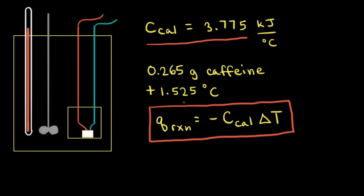Let's say our goal is to calculate the heat of combustion of caffeine in kilojoules per mole. So we take 0.265 grams of caffeine, put that in our calorimeter, combust it, and we find the temperature of the water increases by positive 1.525 degrees Celsius.